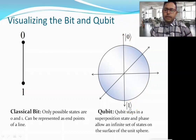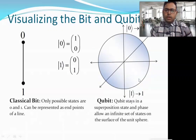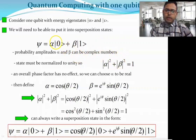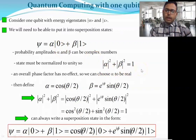State |0⟩ can be represented on the Bloch sphere at the top, and state |1⟩ at the bottom. After measurement, the state will collapse to either 0 or 1. The superposition state |ψ⟩ = α|0⟩ + β|1⟩, where the probability amplitudes α and β are complex numbers. Squaring these amplitudes gives real values representing the probability of obtaining each state.